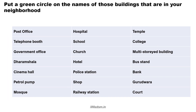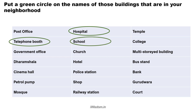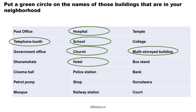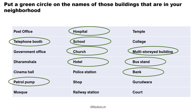Put a green circle on the names of those buildings that are in your neighborhood. Sure! My neighborhood has so many workplaces. I shall circle hospital, telephone booth, school, church, multi-storey building, hotel, bus stand, bank, petrol pump, and shops.